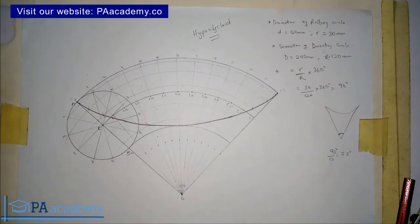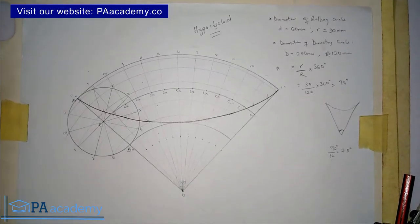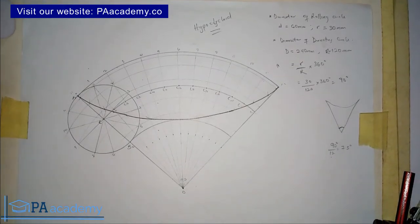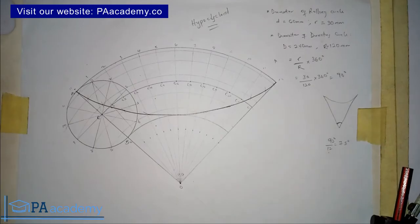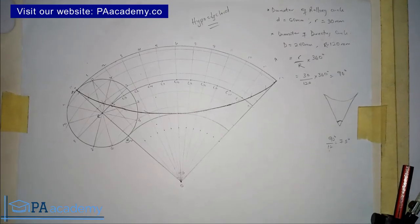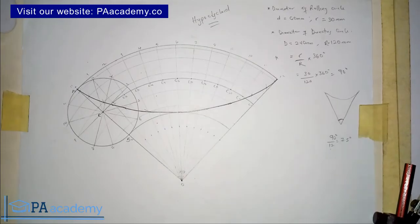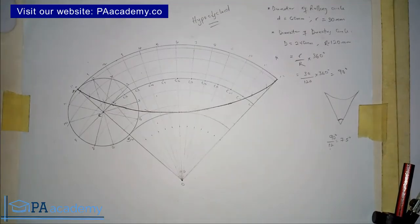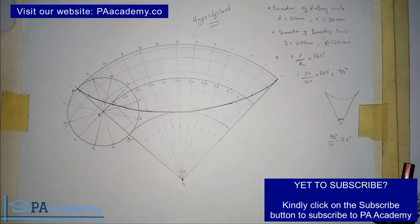With this, we already have our hypocycloid — I've joined those points using the French curve. This is how you draw a hypocycloid. In the next part of this video, I'm going to show you how to draw a tangent and a normal from a given point on the curve.